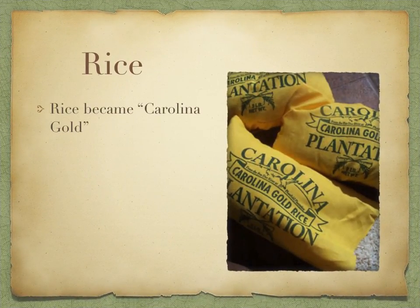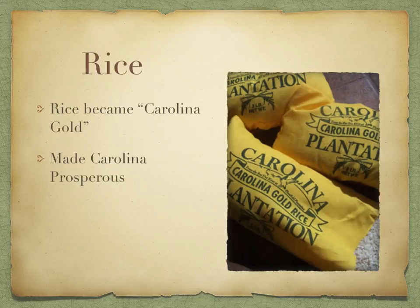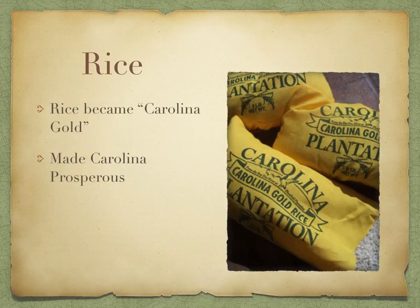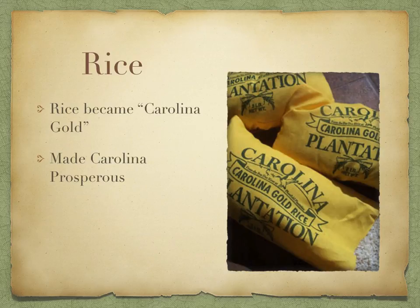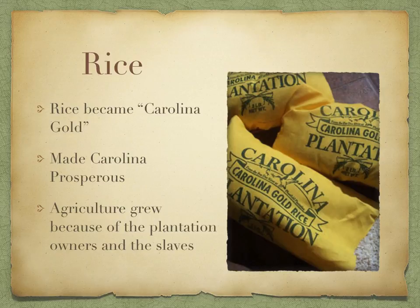The rice grown in South Carolina became known as Carolina gold. It made South Carolina prosperous because the swamps and tidal rivers made South Carolina perfect for growing rice, and the West African slaves who already knew how to grow rice made it a prime spot. The more rice they wanted to grow, the more it led to the growth of slavery. In the early 1700s, South Carolinians really relied on African slavery. Agriculture grew because of the plantation owners and the slaves — the more plantations grew, the more specialized slaves they needed.